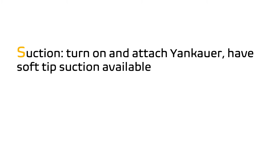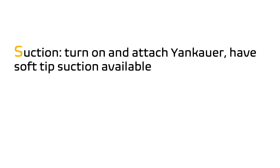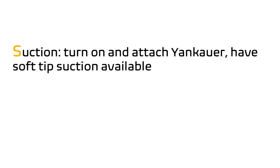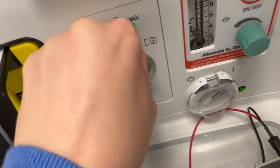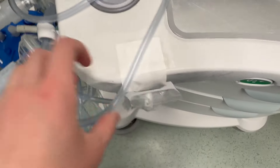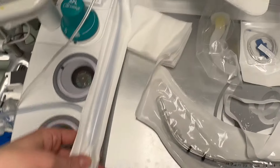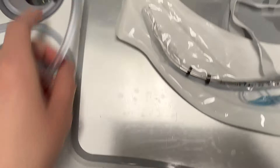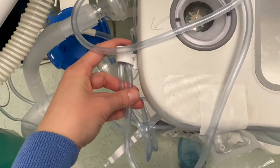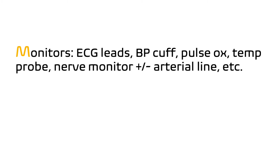The next step in setup is S, which stands for Suction. Turn on the machine and attach the Yankauer tip. Have the soft-tip suction readily available. Here I have my soft-tip suction taped to the machine and the suction line connected to a Yankauer tip. I have the suction line kinked off so we don't have to hear the annoying sound.